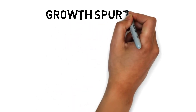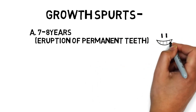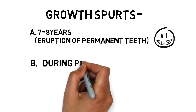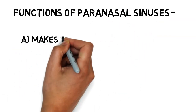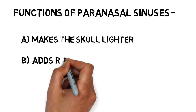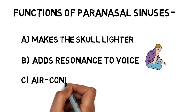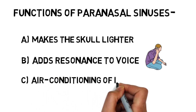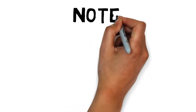Since they are part and parcel of the nasal cavity, they must be lined by pseudostratified ciliated columnar epithelium. These sinuses exhibit two types of growth spurts: firstly around seven to eight years, during the time when the permanent teeth erupt, and secondly at puberty. Their functions include making the skull lighter, adding resonance to the voice, and acting as an air conditioning chamber, adding humidity and bringing the temperature of inspired air to a favorable level.